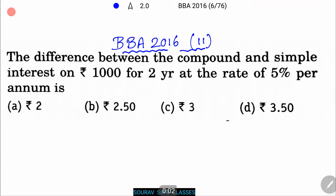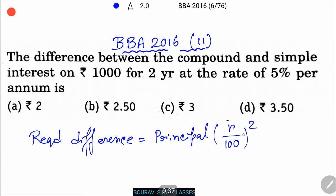Hello students, welcome to Sort of Share Classes. Next problem: The difference between the compound and simple interest on rupees 1000 for two years at the rate of 5% per annum. Here are the four options: 2, 2.50, 3, and 3.50 rupees. Therefore, the required difference equals principal times R by 100 squared, that equals 1000 times 5 by 100 squared, that equals rupees 2.5.